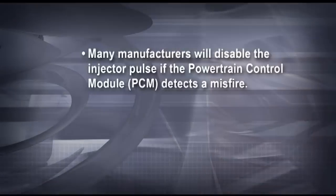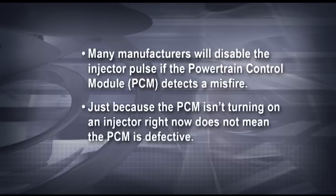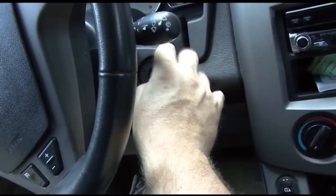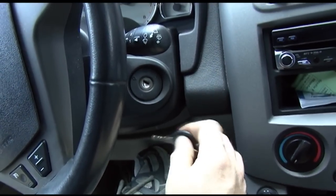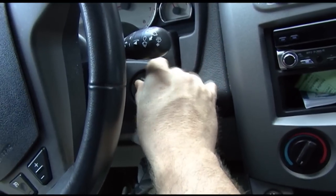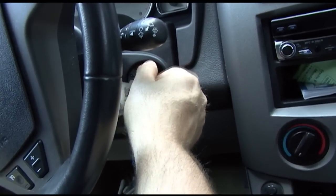Remember, the injector could still be restricted and may not be supplying enough fuel — more testing will be necessary to prove if that's the case. Keep in mind that many manufacturers today will disable the injector pulse if the PCM detects a misfire. Just because the PCM isn't turning on an injector right now does not mean the PCM is defective. Shutting the engine off and restarting it may result in the PCM firing the injector again until the PCM detects a misfire and turns it back off.